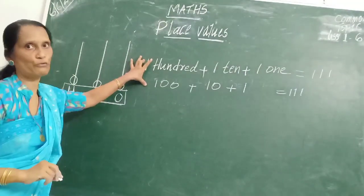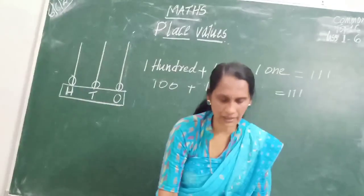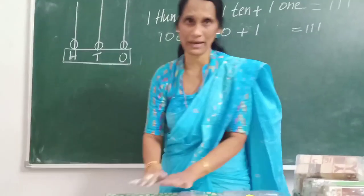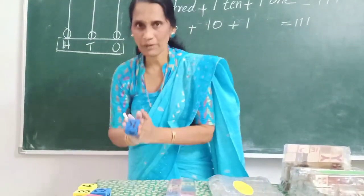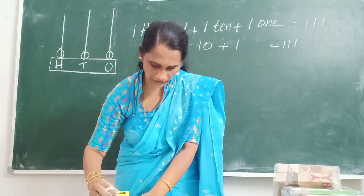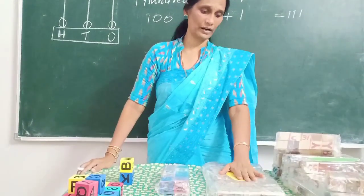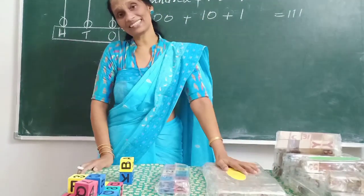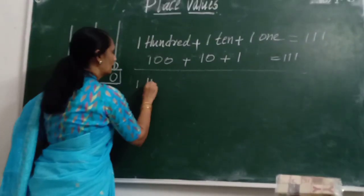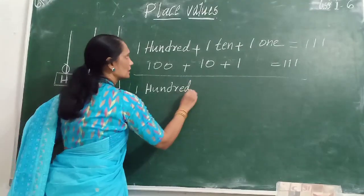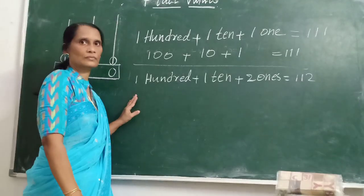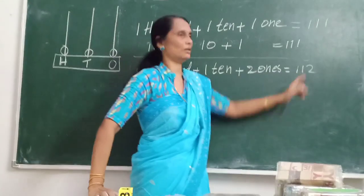This is the expanded form of the number. 100 plus 110 plus 11 — that is the expanded form. How to represent that number? 100 and 11. If I place 2 here: 100, plus 1 ten, plus 2 ones. 100 plus 110 plus 2 ones. So the answer is 100 and 12, which is 112.